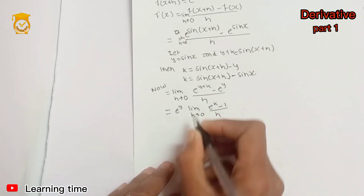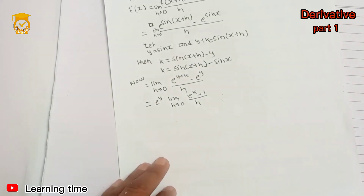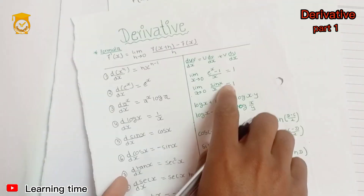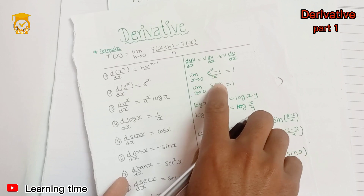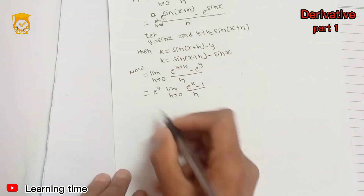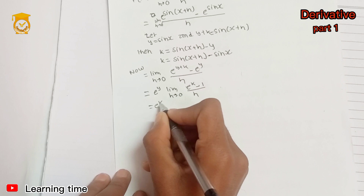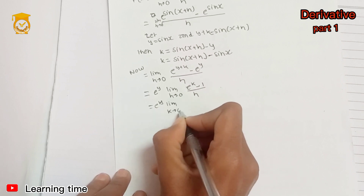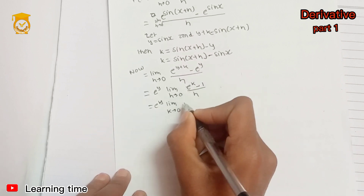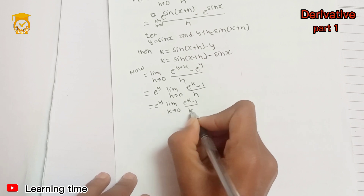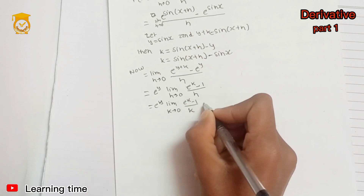Using the formula, limit k to 0 of (e to the power k minus 1) divided by k equals 1. So we apply this limit formula and get e to the power y times 1.